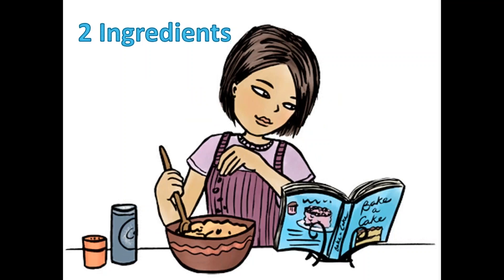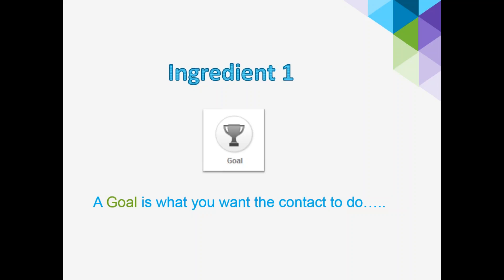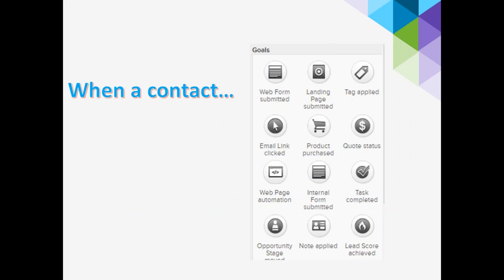There are really only two ingredients to build a campaign. Putting lots of those ingredients together will build a complex campaign, but just two ingredients will help you start the ball rolling with automation and build your first campaign. The first ingredient is a goal, represented in Infusionsoft with a circle. A goal is what you want the contact to do — fill out a form, fill out a landing page, register for a webinar, click on a link. We have lots of different goals.